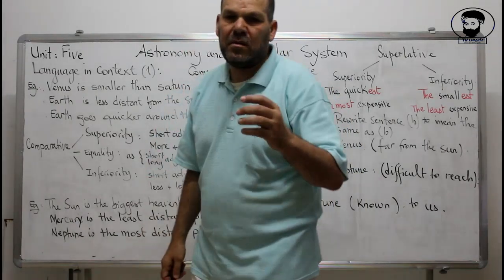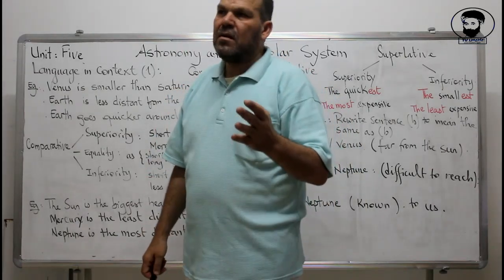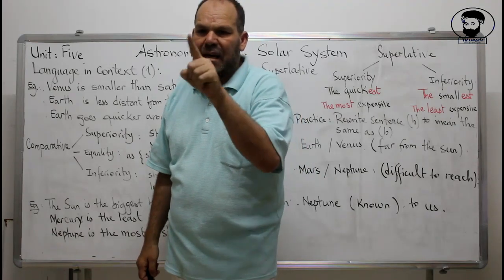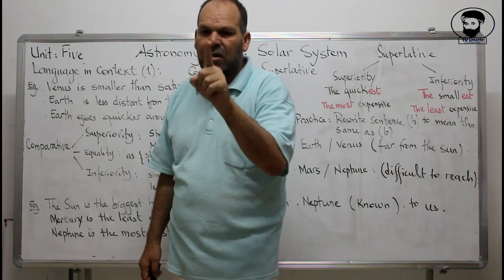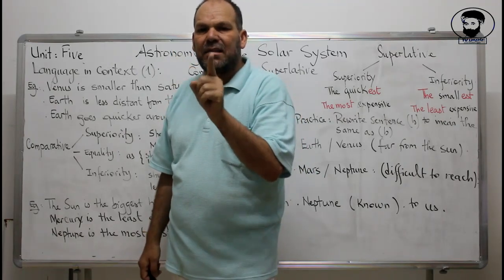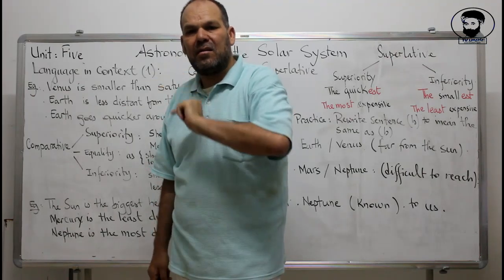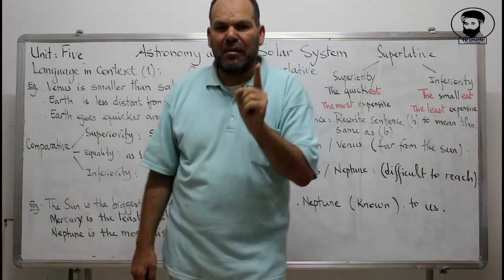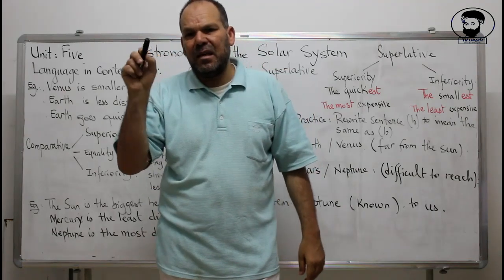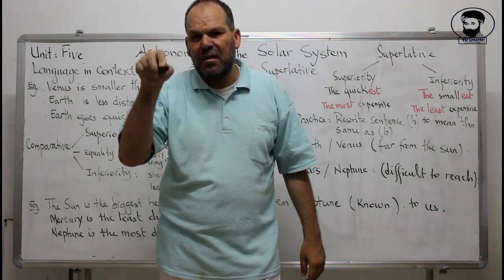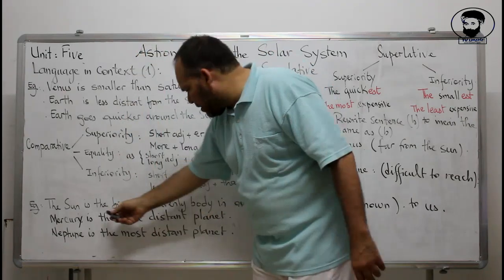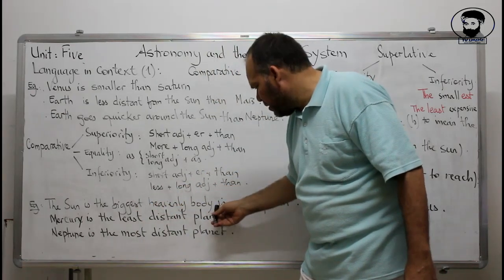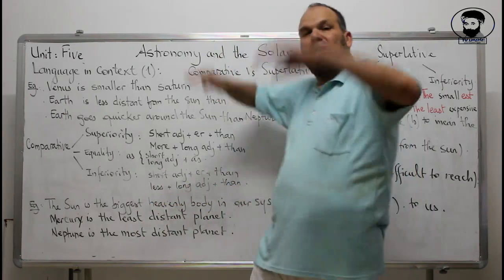When a word follows the consonant-vowel-consonant pattern, we double the final consonant before adding -ER or -EST. For example: 'scan' becomes 'scanner' (double N); 'stop' becomes 'stopped' (double P). So the Sun is the biggest heavenly body in our solar system.